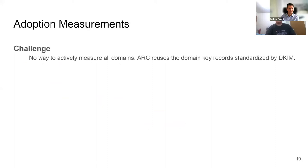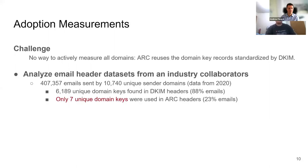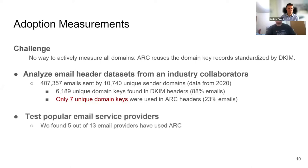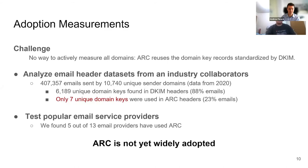The first thing we looked into is adoption measurements. Traditionally, people study the adoption rate of DKIM by scanning domain key DNS records. However, this is not possible for ARC at all, as ARC directly reuses the same DKIM key record. We instead tackle this problem two other ways. One is to analyze datasets provided by industry collaborators. With the dataset we retrieved in 2020, we found over 88% of emails were signed with over 6,000 DKIM keys, while only 7 unique keys from Google, Outlook, Zoho, and a few email marketing services were observed in ARC headers. We also registered accounts with 13 popular email services to verify ARC implementation, but only half had ARC. Our conclusion is that ARC is not yet widely adopted.